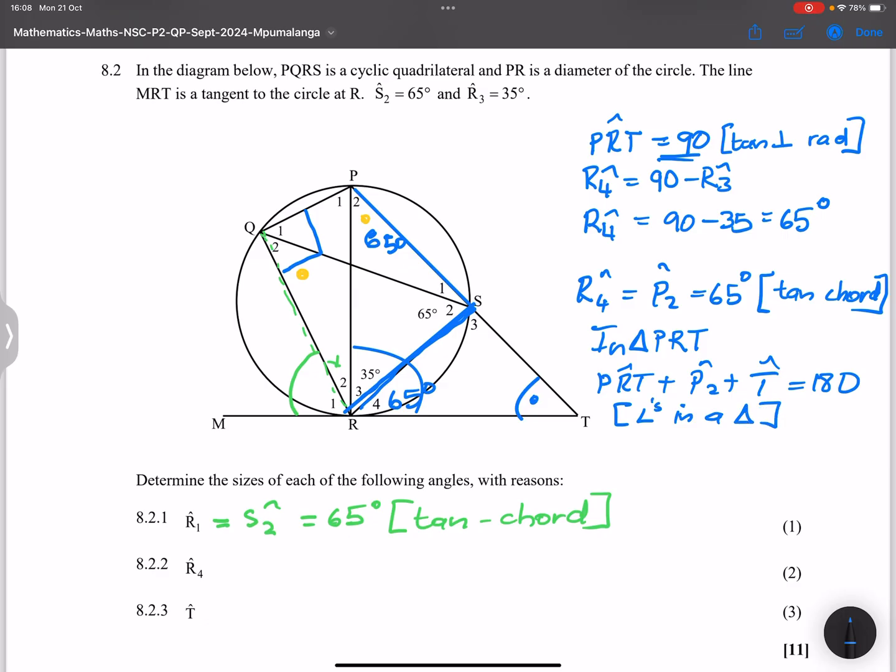And so that means that angle T should be equal to 180 minus, that's minus 90, which is PRT, and that's minus that R2, which is 65. I'm already thinking about the answer. So that's 90 plus 65, and so angle T should be equal to 35 degrees. I'm sure there were other ways in which we can get that.